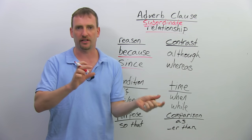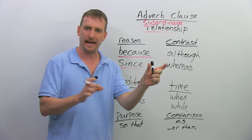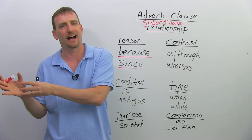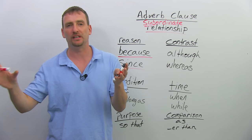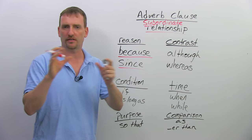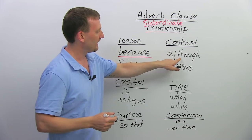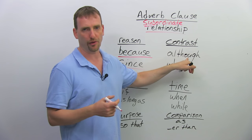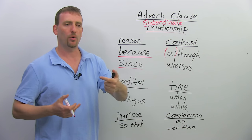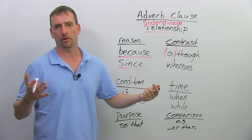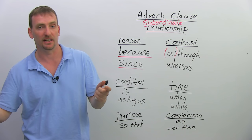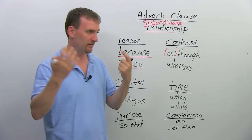Contrast means to show that there's a difference. It could be positive/negative, but it doesn't have to be — it could be one idea and a contrasting idea, one expectation and a completely different result. Be careful not to just look for a positive or negative verb. The more common conjunctions for contrast are "although" or "though" — both mean the same thing — or "whereas." For example: "Although I am very rich, I can't afford to buy a Lamborghini." Rich means lots of money; can't afford means not enough money. Those are contrasting ideas.